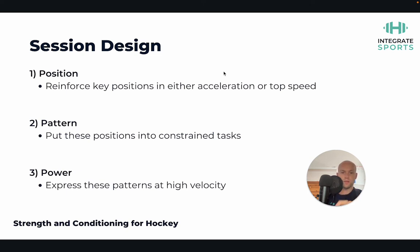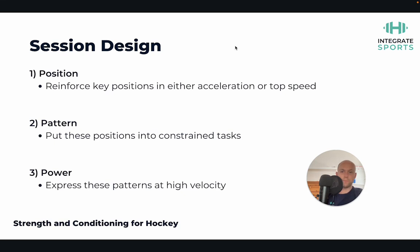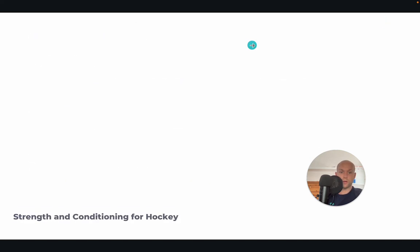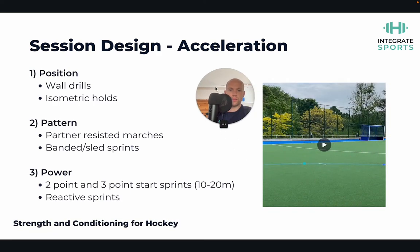The amount of time you spend on each of these three sections will depend on the experience and technical proficiency of the athlete. With a young athlete, you might spend quite a lot of time on the position aspects and a little bit on max effort sprints. A highly experienced athlete may just need a little reinforcement during movement prep of those positions, a quick bit of patterning, and then the majority of the session on the power aspect. Generally, a speed session should sit around 30 to 40 minutes, and you can allocate time appropriately.